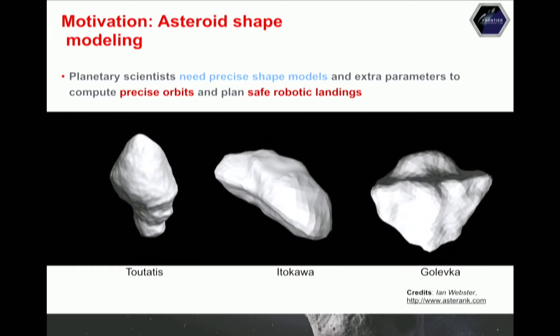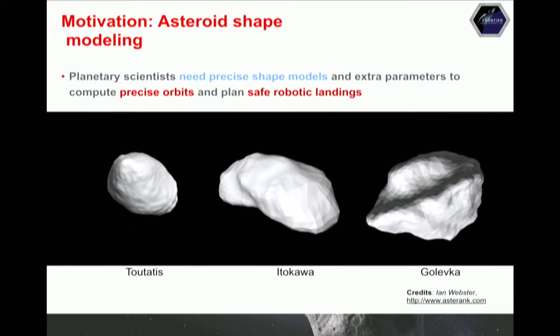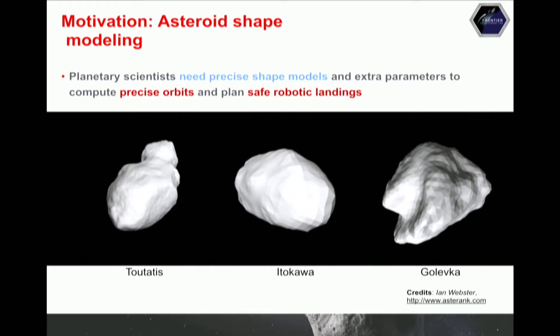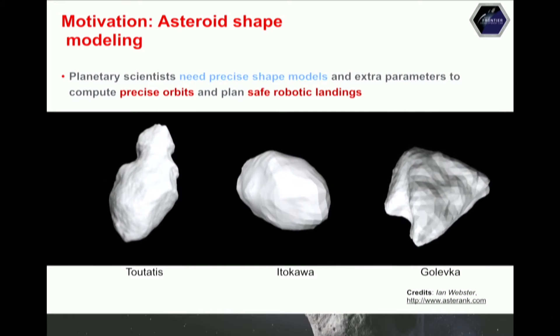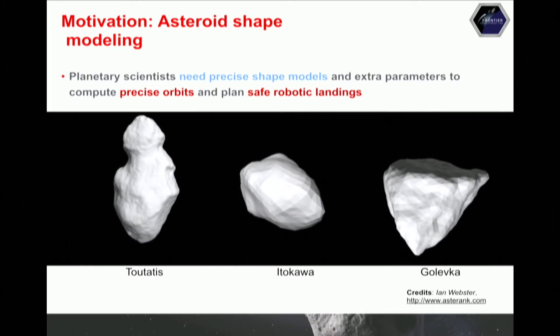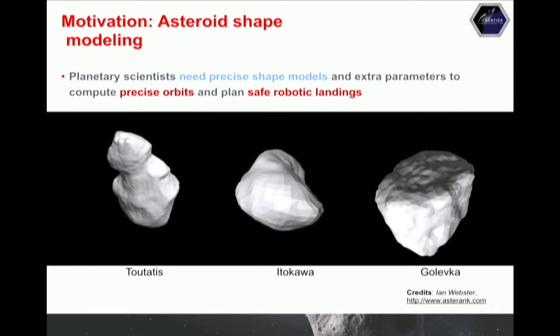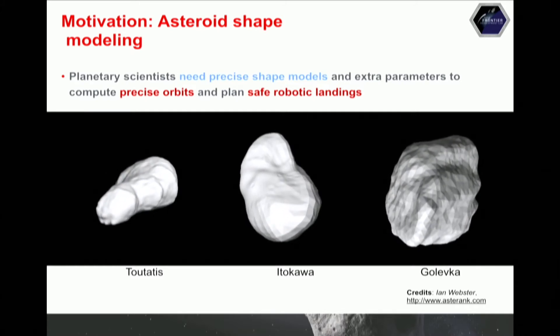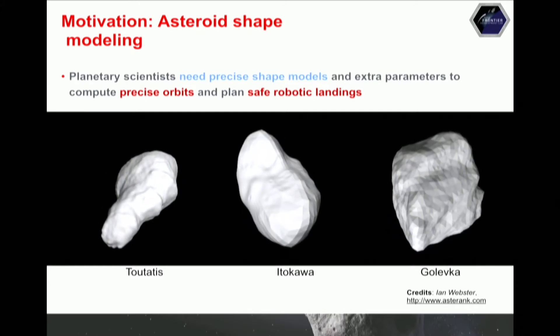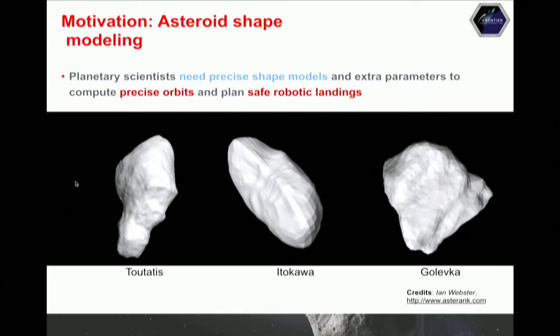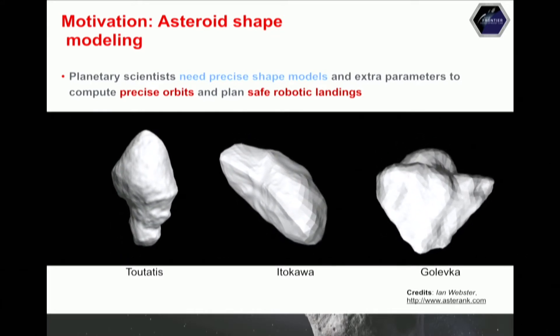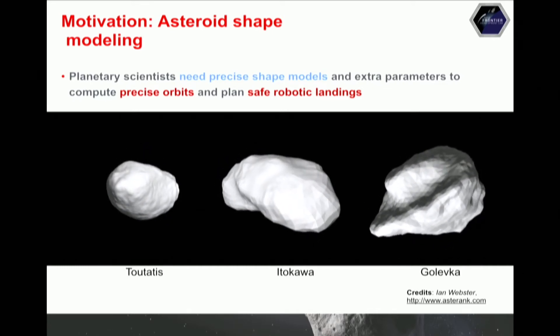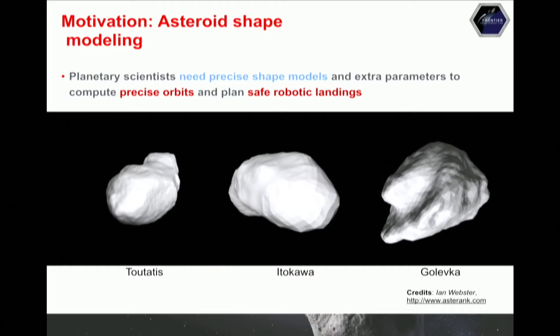Scientists need precise shape models of asteroids in order to compute precise orbits and plan for safe robotic landings. However, since there are so many different kinds of asteroids, there are many different kinds of shapes that we need to be able to model. On the screen are just three of these shapes and they're all very different from one another. Of particular interest, all the way to the right of the screen, is the Asteroid Golovka. The model is made up of many itty bitty little triangles, which we call facets. Each of these facets needs to be fit in order to come up with a 3D model.